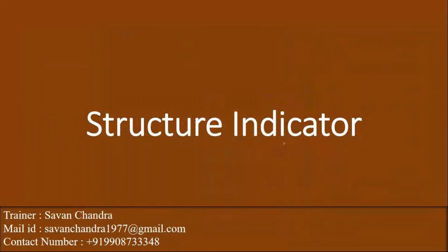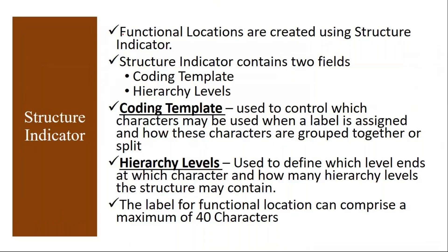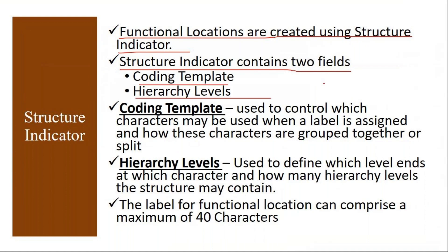To create functional locations, we need a structure indicator — it is mandatory, it is a prerequisite. Functional locations are created using a structure indicator, which contains two fields: coding template and hierarchy levels. The coding template is used to control which characters may be used when a label is assigned and how these characters are grouped together or split. So at each hierarchy level, the coding template defines the character pattern.